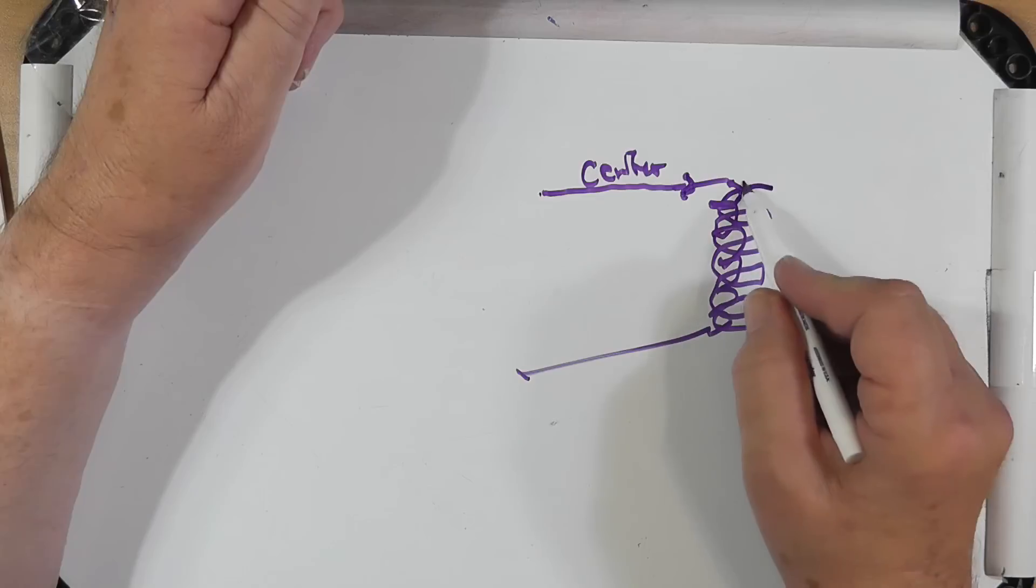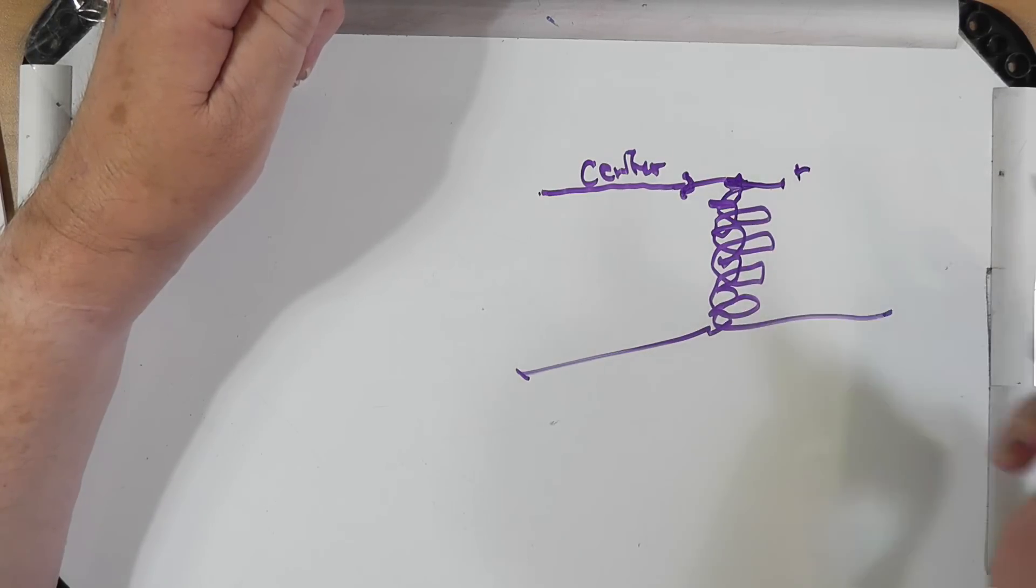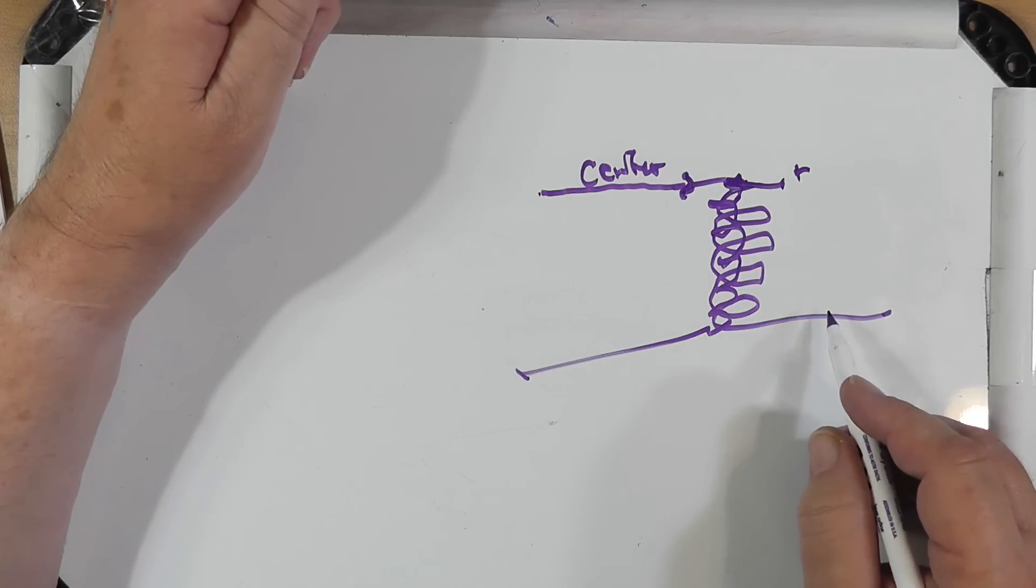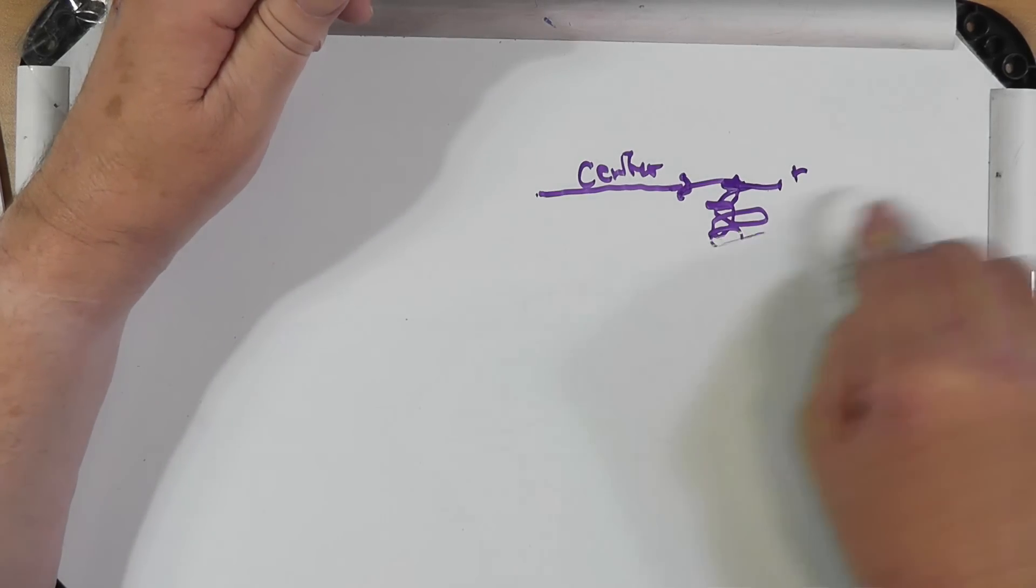The center conductor will be directly connected to this, and that's why they put the plus there, just so you know where it is. There are many different ways to make these baluns work.